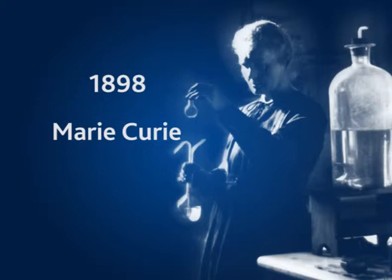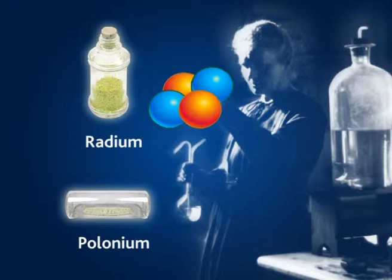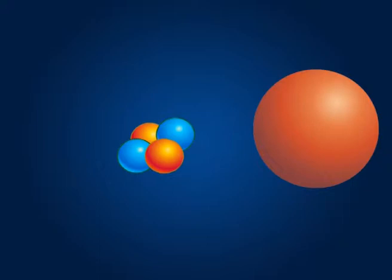Marie Curie led the way in 1898 by isolating polonium and radium, two radioactive elements that emit alpha particles. For 30 years, these particles produced by radioactivity were to be used as projectiles for exploring the atom and gradually gaining an understanding of its innermost structure.